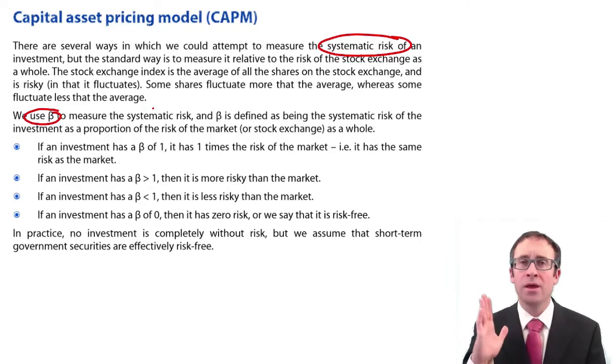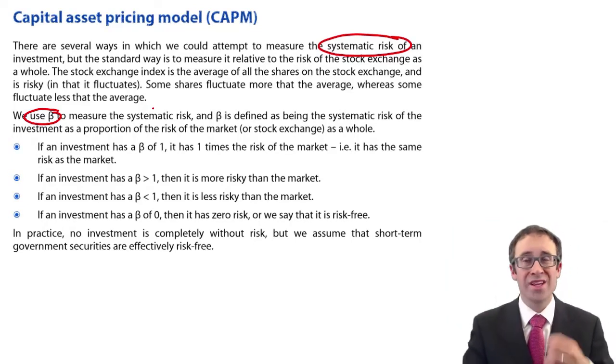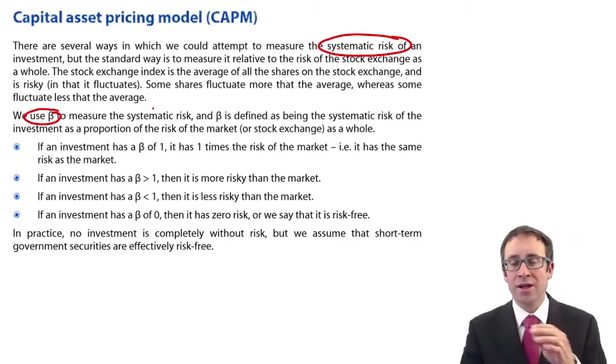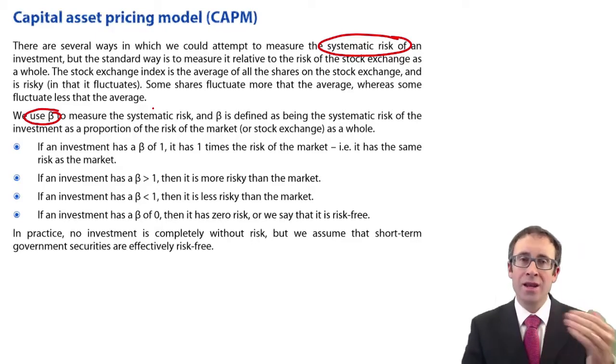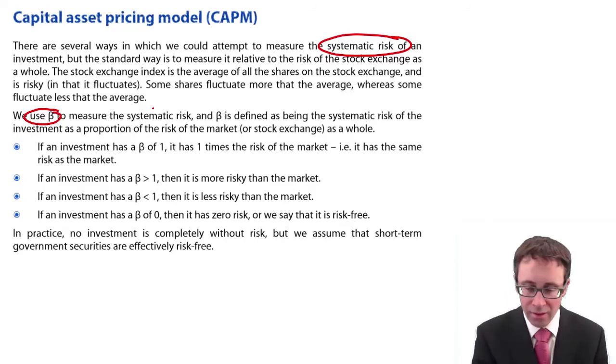Now, it's not just a simple case of saying this investment has twice as much risk as the market, so therefore we need double the amount of return. It's not a direct linear approach as that. It's not saying if we have half the risk, we then want half of the return. There's just a little bit more to it than that. So I'm just going to bring in a numerical example that you may wish to go through and play around with.